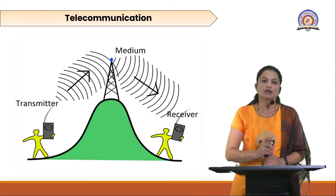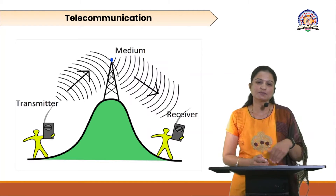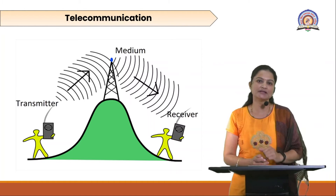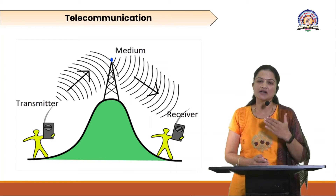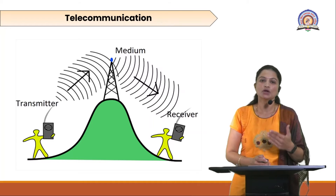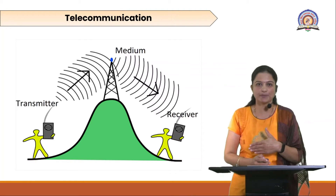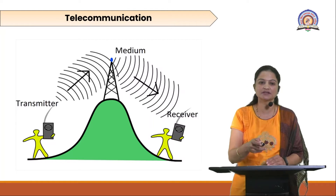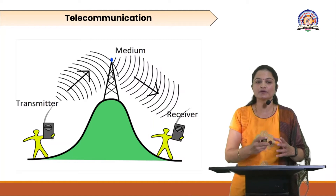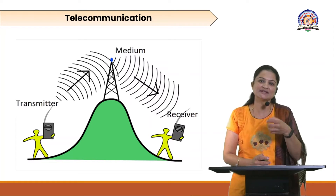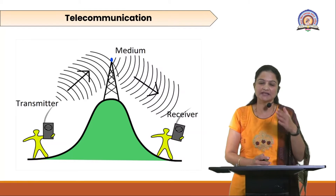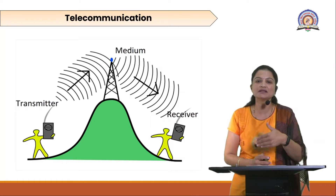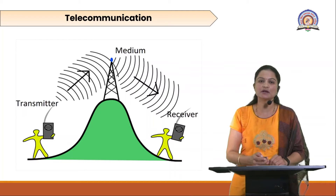In a telecommunication system, as shown in this diagram, there is a transmitter that wants to transmit a message or data to a receiver. For that, a medium is required. Here, a satellite tower is shown in the diagram. Whatever the transmitter sends is first received by the medium — that tower — then sent to the satellite, and through the satellite it is received at the destination, which is the receiver. This is how basic communication happens.